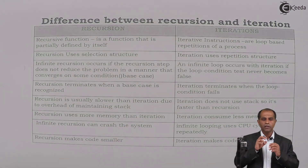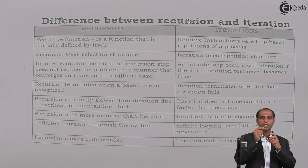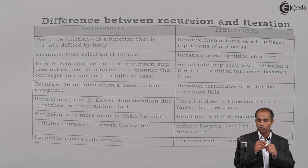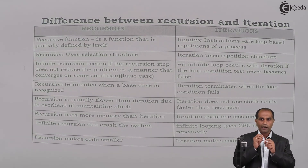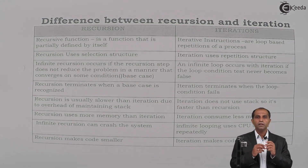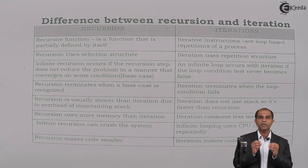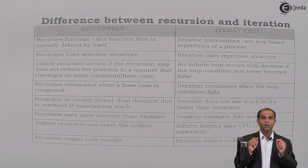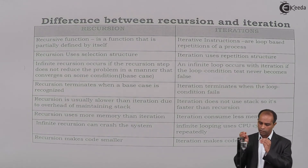Recursion will use selection instructions — if, if-else, or switch-case — but never loop instructions. Whereas iterations use repetitive loop instructions. Infinite recursion occurs if recursion is not stopped at a specific condition. If the base condition is not written properly, recursion might end up as an infinite process. Similarly, an infinite loop can occur with iterations if the loop condition never becomes false. In both cases, infinite operations are possible only due to user error.